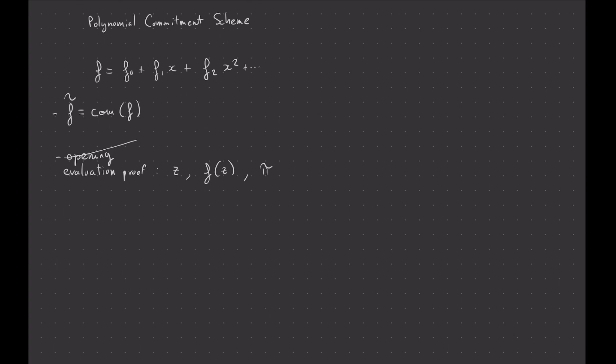And the one that Plonk used in the Plonk paper is the Kate polynomial commitment scheme, or I think the abbreviated KZG, I believe, in the paper, from the three authors of the original paper. And this is a scheme that pretty much requires you to have a trusted setup. So Kate PCS requires trusted setup.